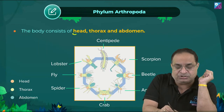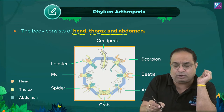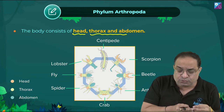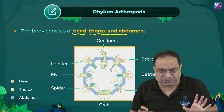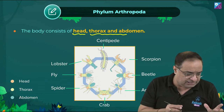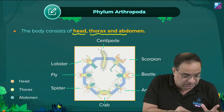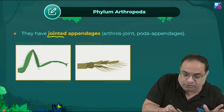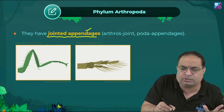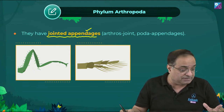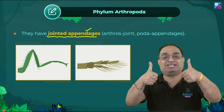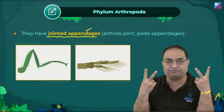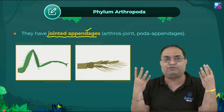The body is divided into head, thorax, and abdomen. In some arthropods, head and thorax are fused to form a cephalothorax — but that's not in your syllabus, so don't worry. Next feature: jointed appendages. In insects, there are three pairs of legs — pro-thoracic, mesothoracic, and metathoracic legs. That's six legs total.